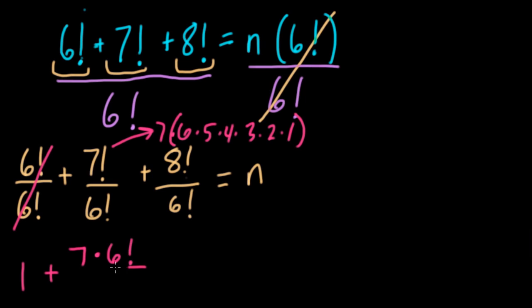And we're dividing that by 6 factorial. That's going to be really nice because these factorials divide and cancel out to 1. So really that's just 7 times 1, which is 7.